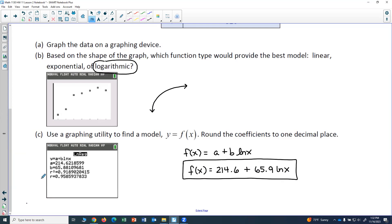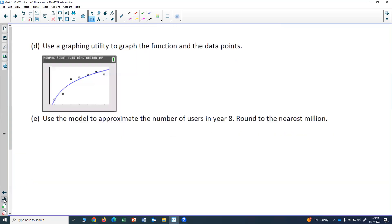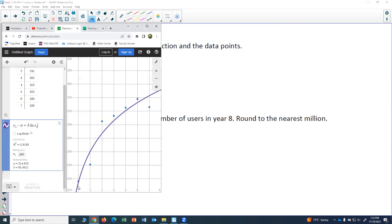All right, now there's more to the problem. We've got our model. Use a graphing utility to graph the function and the data points. That happened automatically when I put my function in the y1 equals a plus b natural log of x1. So I've got my graph and my scatter plot. It's just a matter of matching it up to the correct one in your homework system.